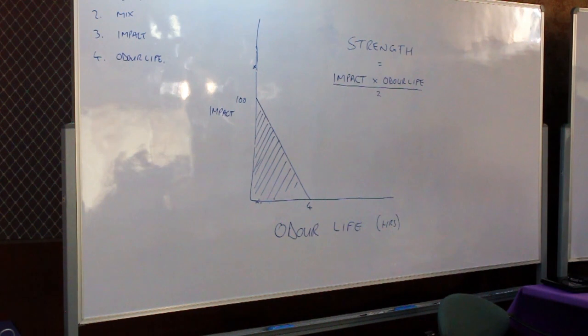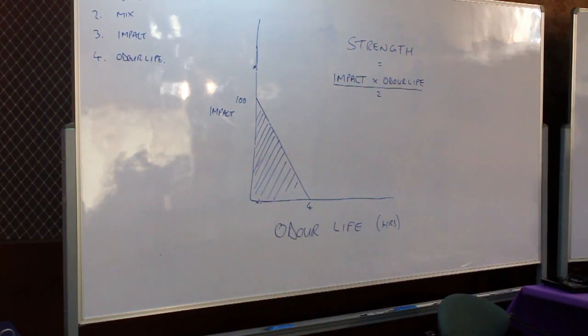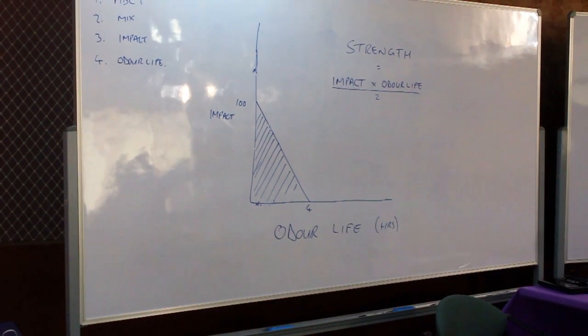So that would be 200. So we have 200. You could call them odor units. Why do you divide by 2?